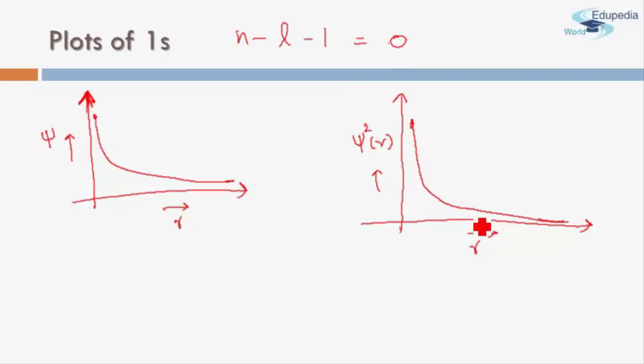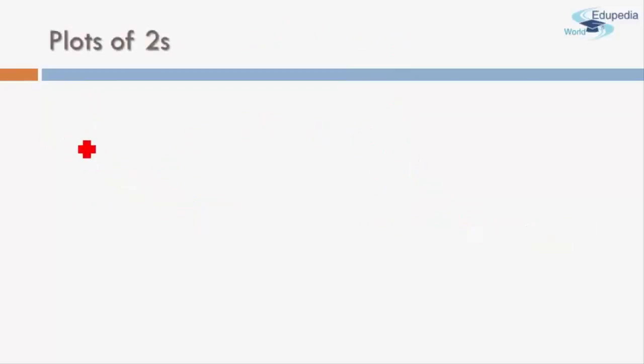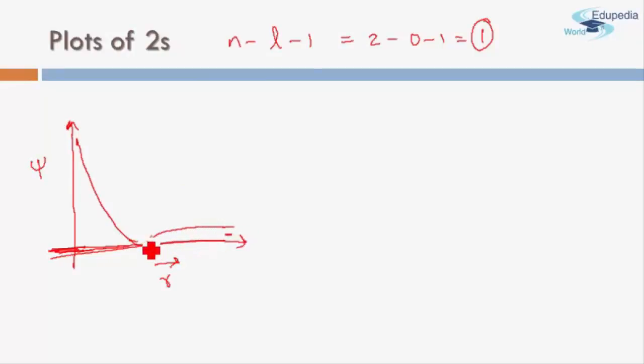Now let's look at plot of 2s. Again we'll draw two plots: one is the plot of psi and the other is the plot of psi square. Here the number of radial nodes is n minus l minus 1, which is equal to 2 minus 0 minus 1, which is 1. So it has one radial node. That means the value of psi will become 0 at least once before infinity. Again at nucleus it starts at very high value, and at infinity it goes to very low value, and in between somewhere it becomes 0. This is how it looks to us.